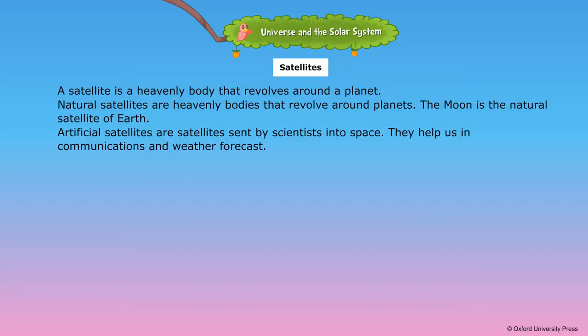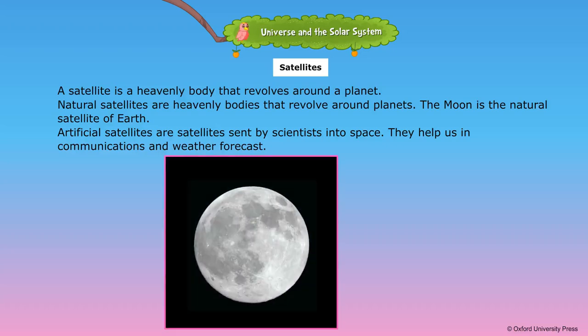A satellite is a heavenly body that revolves around a planet. Natural satellites are heavenly bodies that revolve around planets. The moon is the natural satellite of Earth. Artificial satellites are satellites sent by scientists into space. They help us in communications and weather forecast.